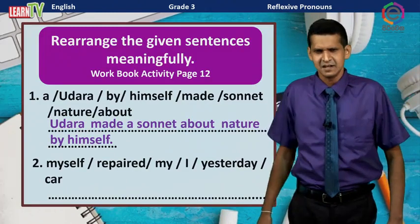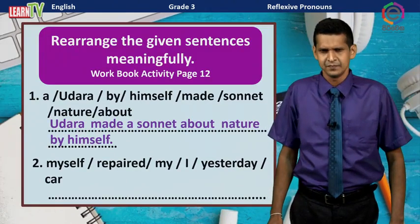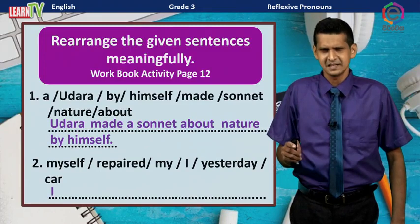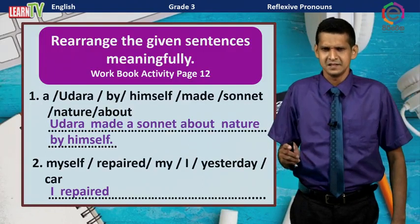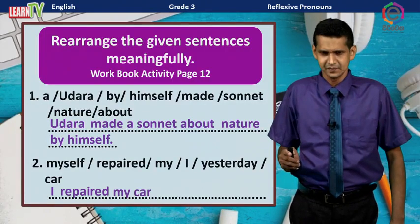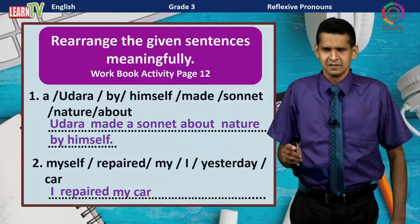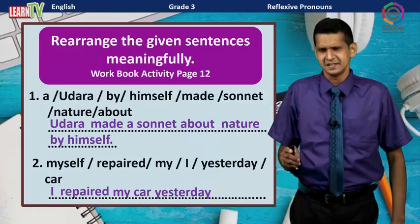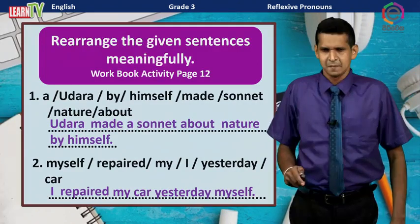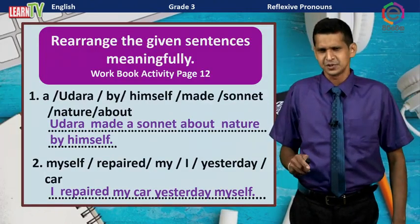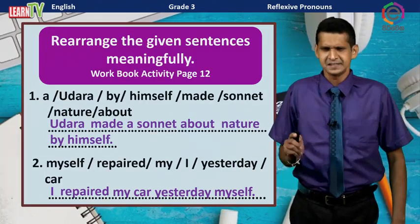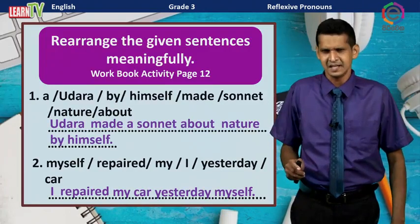If we go to the second one: the doer is 'I,' verb is 'repaired,' object is 'my car,' and the time is 'yesterday.' The reflexive pronoun is 'myself.' The sentence is: I repaired my car yesterday myself. Here the reflexive pronoun is used to show emphasis.